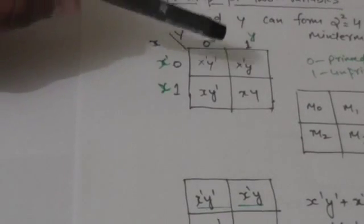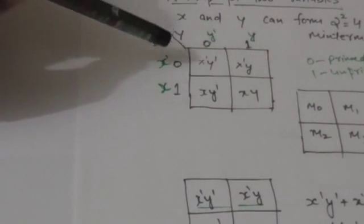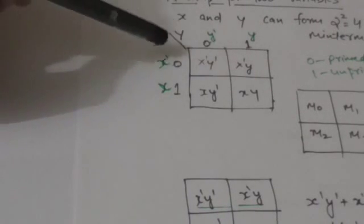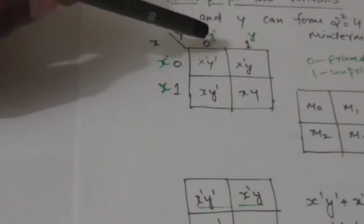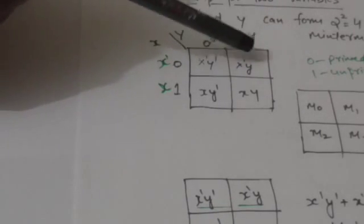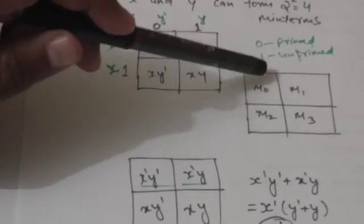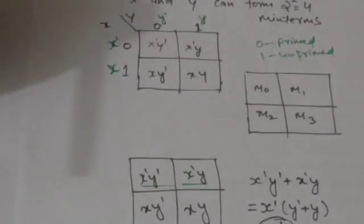The min term which a square represents can be obtained by concatenating the label of the row with the label of the column of that square. For example, this square has its row labeled x-naught and column labeled y, so it represents the min term x-naught·y. In the two-variable K-map, the four squares represent min terms m0, m1, m2, and m3 respectively.